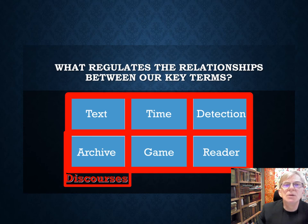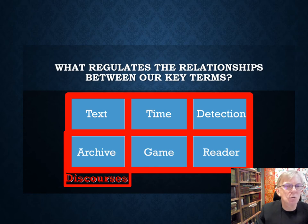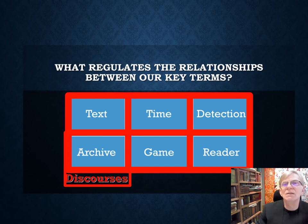This means that the detective has to choose the right discourse. The detective reader has to select the right archive to interpret the evidence correctly so that she or he can arrive at an understanding and perhaps identification of the crime. The detective has to identify and activate the right archive of his or her knowledge in order to access the appropriate discourse.